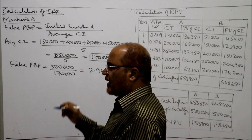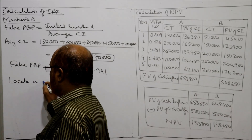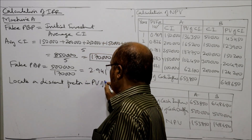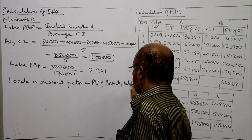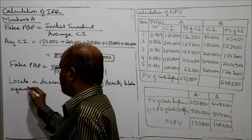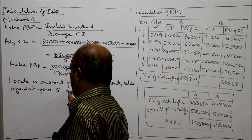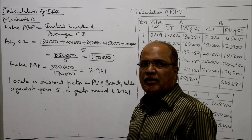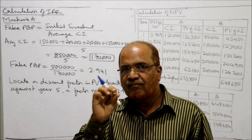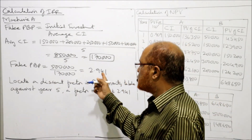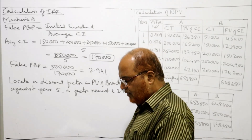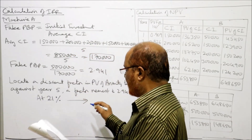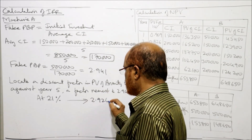Fake PBP equals five lakh divided by one lakh seventy thousand, giving 2.941. Now locate a discount factor in the PV of annuity table against year 5 nearest to 2.941. At 21% you can find the value 2.926, which is nearest to 2.941. Therefore we begin our calculations at 21%.